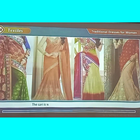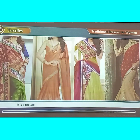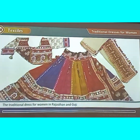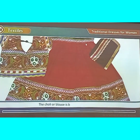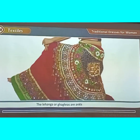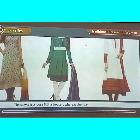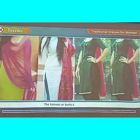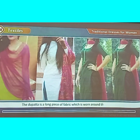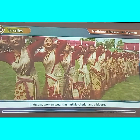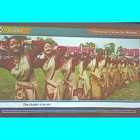Traditional dresses for women: The sari is worn in many states but in different styles. It is a rectangular cloth of about 5 metres 50 centimetres, which is unstitched. The traditional dress for women in Rajasthan and Gujarat is the Lehenga Choli or Ghagra Choli. In Punjab, women wear Salwar Kameez or Cholidar Kurta. The Salwar is a loose-fitting trouser, whereas the Cholidar is a tight-fitting trouser. The Kameez or Kurta are long shirts, and the Dupatta is a long piece of fabric worn around the neck.